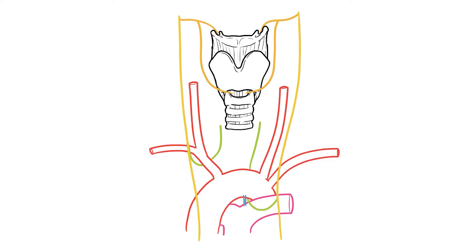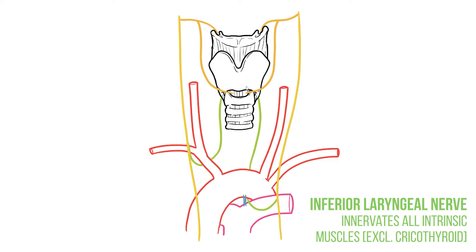The recurrent laryngeals finish as inferior laryngeal nerves. These innervate the remaining intrinsic muscles and so are responsible for most movements of the vocal cords.